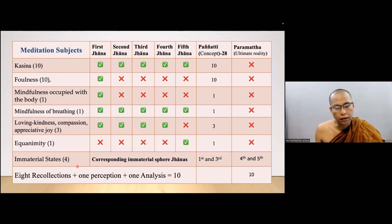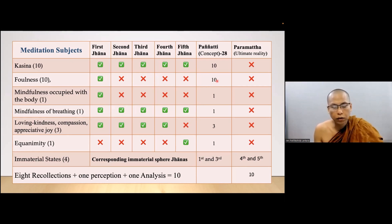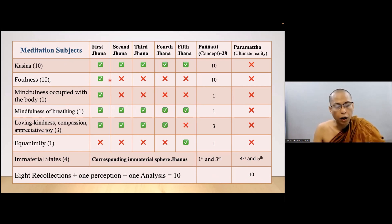For the immaterial states, they are just equivalent to the fifth jhana in the Abhidhamma classification. In this class I need to add more information to identify whether the meditation object is concept or ultimate reality. Because we said the meditation subjects referring to ultimate reality do not support the attainment of jhana — those ten meditation subjects. But the other meditation practices — what are their objects? Kasinas — all are concepts.